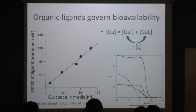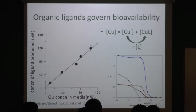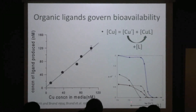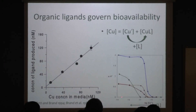Phytoplankton can actually produce ligands to sequester copper. This is from Jim Moffat's work back in the early 90s, showing that as you increase the copper concentration in a cyanobacterial medium, you get production of organic ligands associated with that increasing copper. As you add these ligands to the system, you convert copper prime to CuL, reducing free copper and bringing the organisms back to this just-right situation.